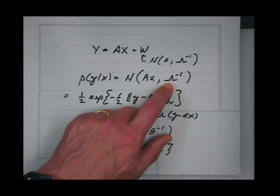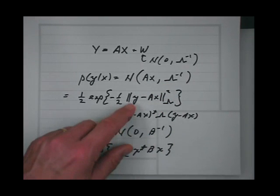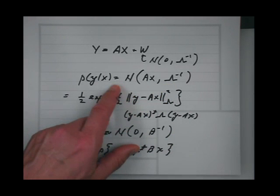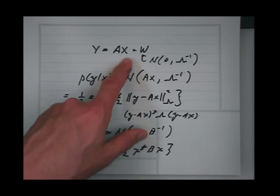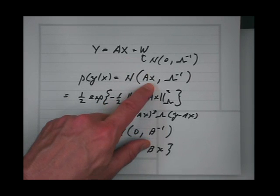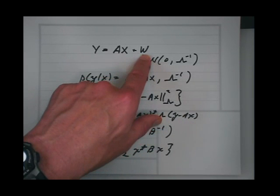So the conditional distribution — the blurring operation A is reflected in the conditional distribution, but only through the mean, not through the variance. Because the variance — the noise is added. So in the system model, the signal goes in, gets multiplied by A, and to that I add the noise w, which produces y.